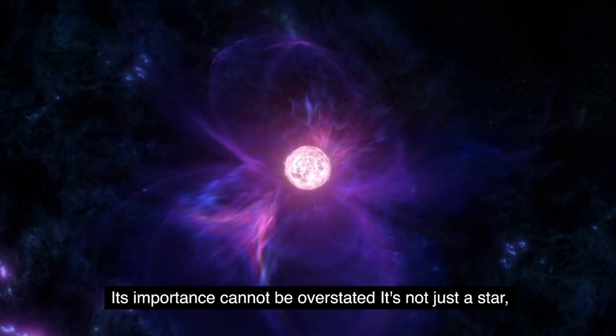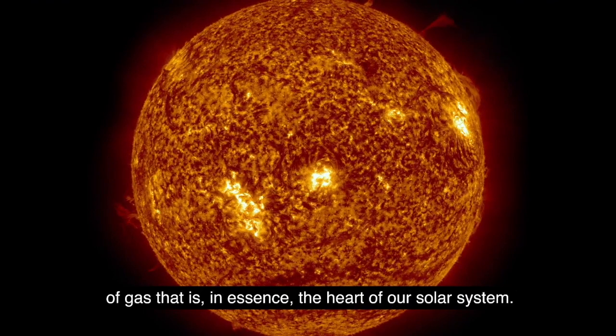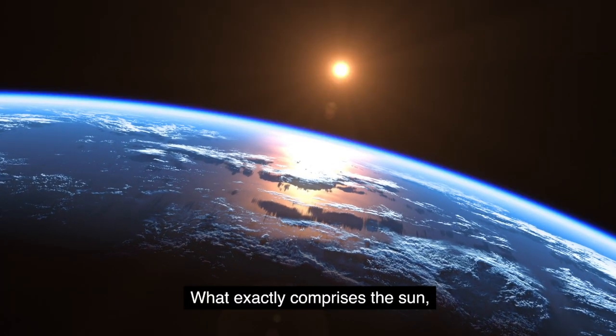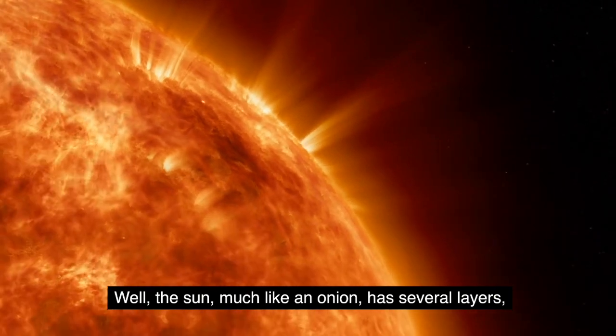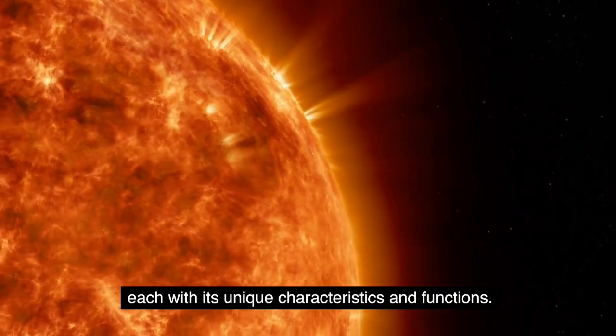So let's delve deeper into understanding this blazing ball of gas that is, in essence, the heart of our solar system. What exactly comprises the sun, the brightest object in our sky? Well, the sun, much like an onion, has several layers, each with its unique characteristics and functions. Let's start at the heart of it all, the core.